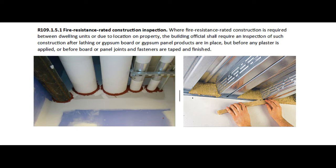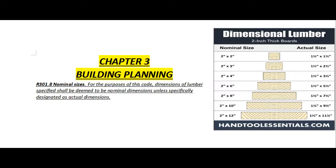Inspection shall be conducted before board or panel joints and fasteners are taped and finished. Chapter 3 Building Planning. R301.8 Nominal Sizes: For the purposes of this code, dimensions of lumber specified shall be deemed to be nominal dimensions unless specifically designated as actual dimensions.